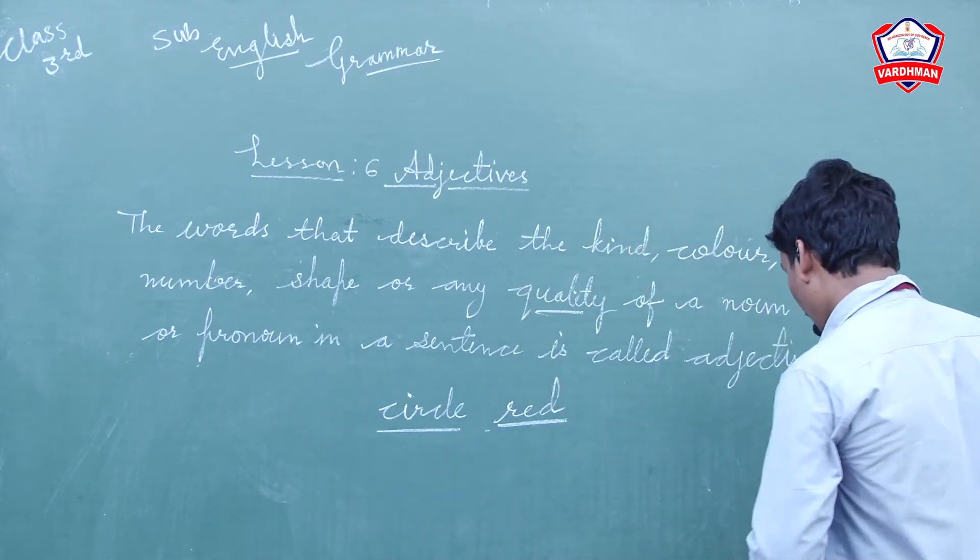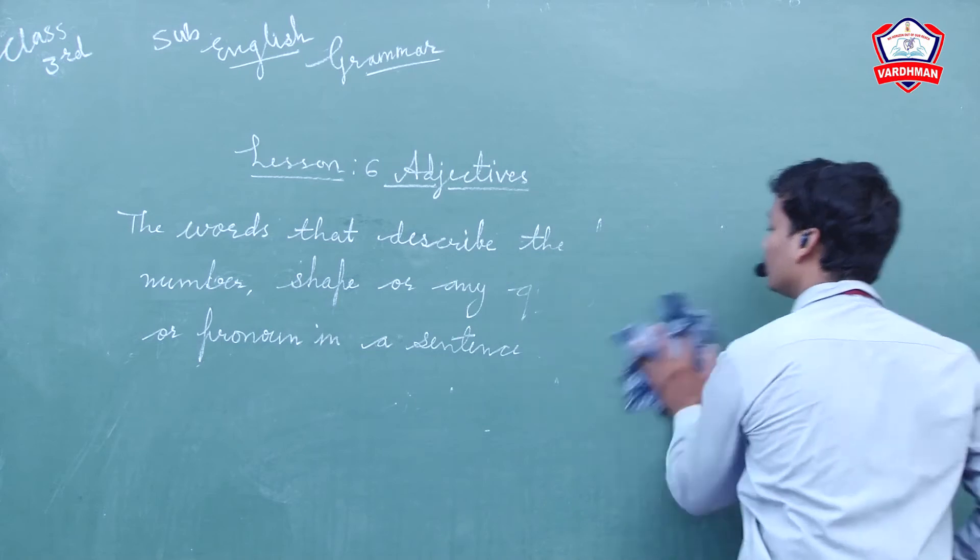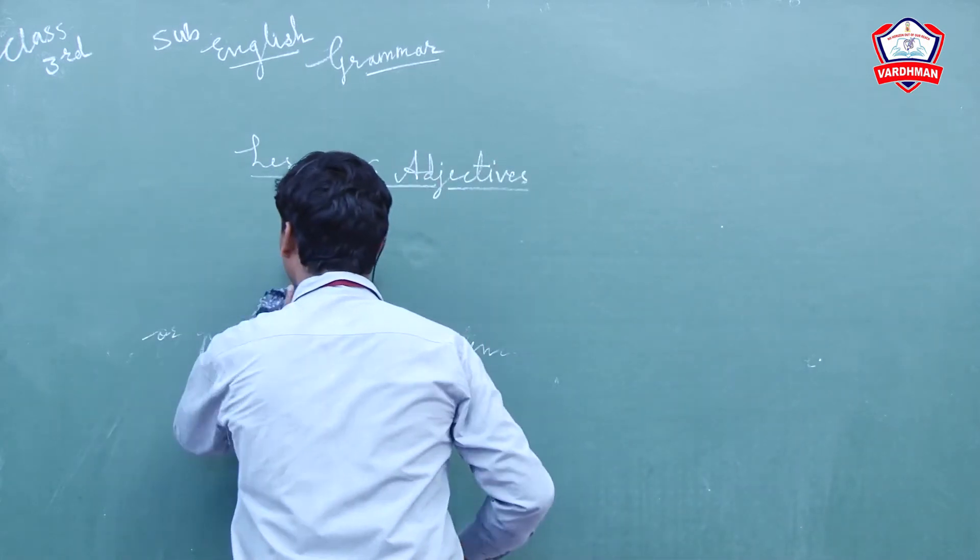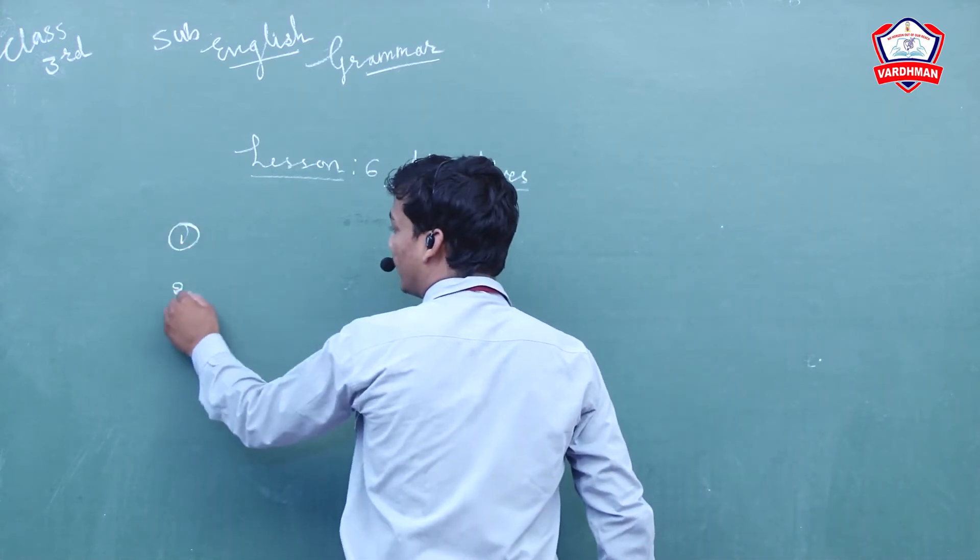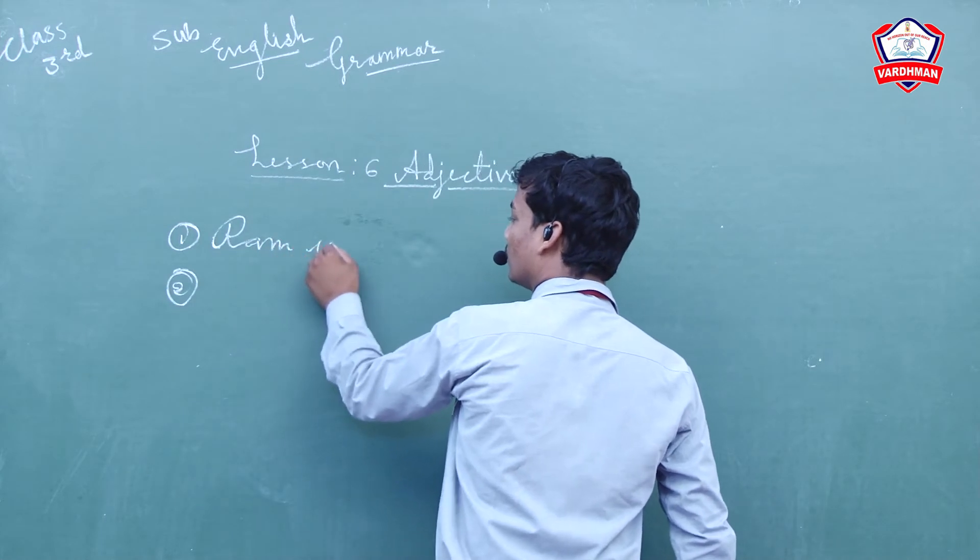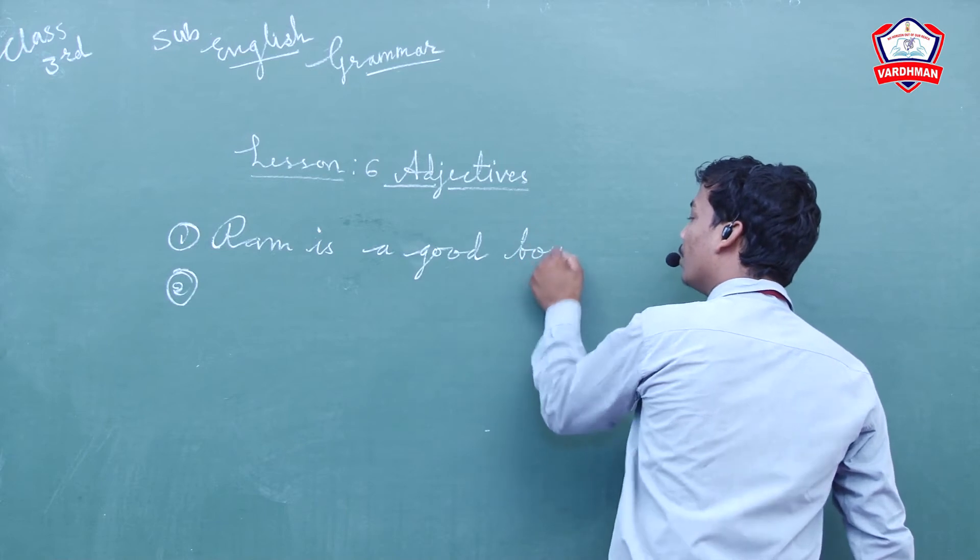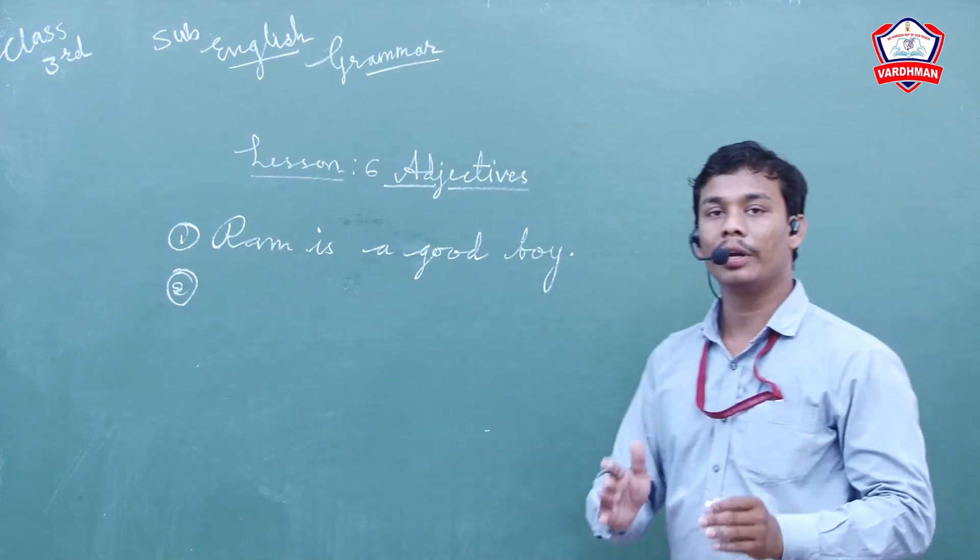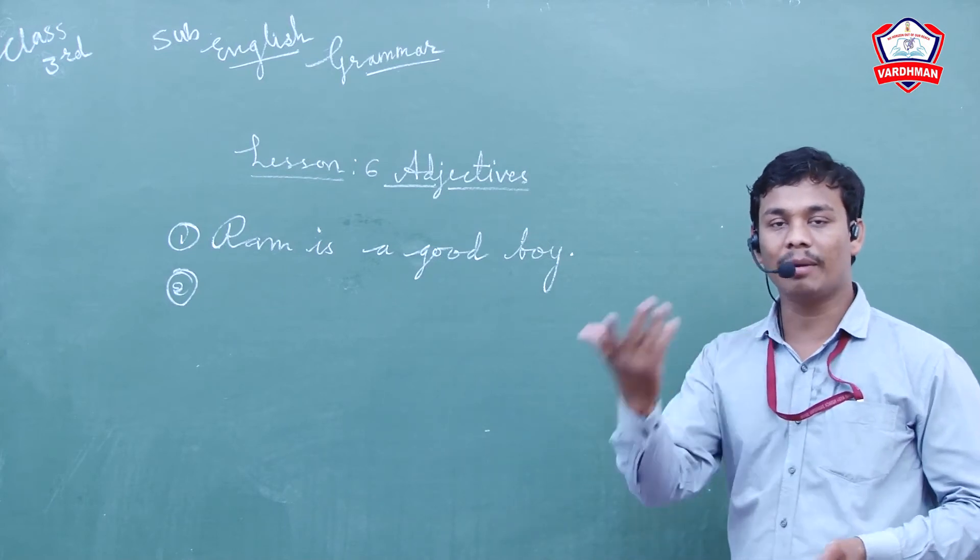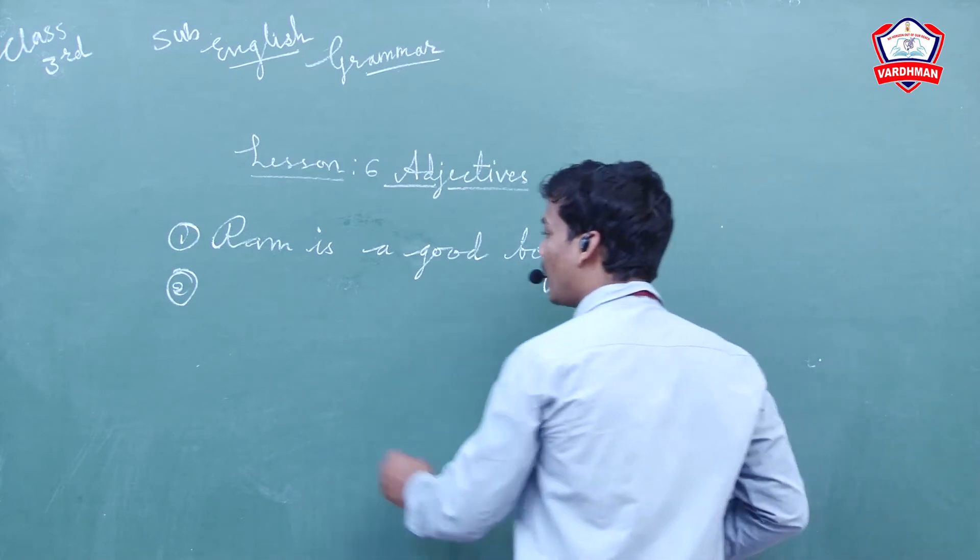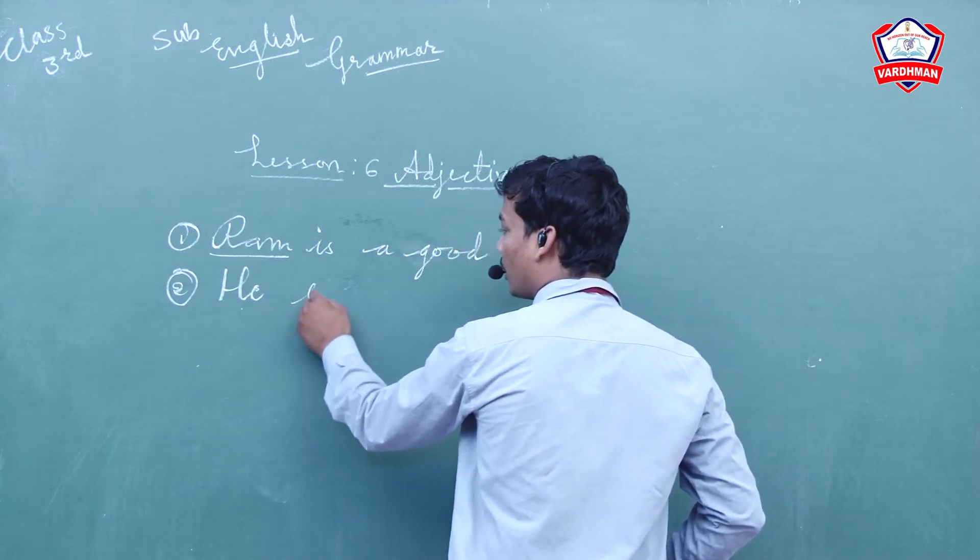Now we will study Exercise Number One which is given in your book. How to solve that exercise? Let me explain. Here you have to find out the adjective in the questions. I am writing my own sentence: Ram is a good boy. I told you that the word that describes a noun or pronoun - the thing that is describing something - that word is called an adjective. This is someone's name, this is a noun, or in place of noun one word is used, this is a pronoun.